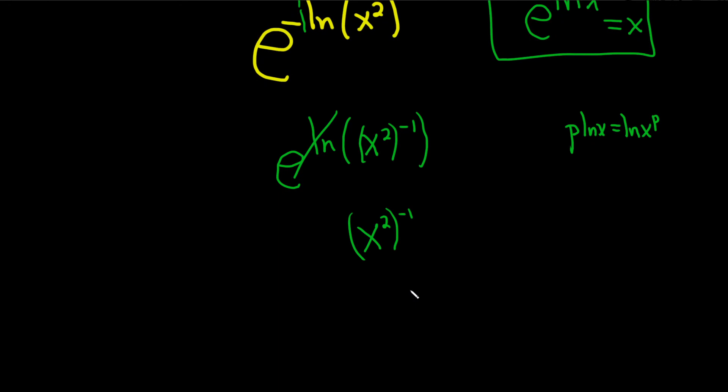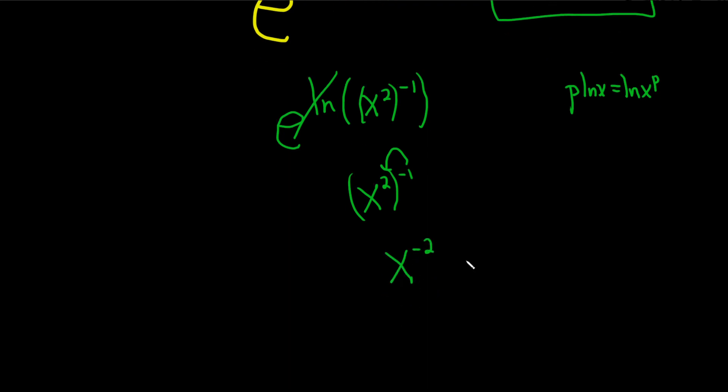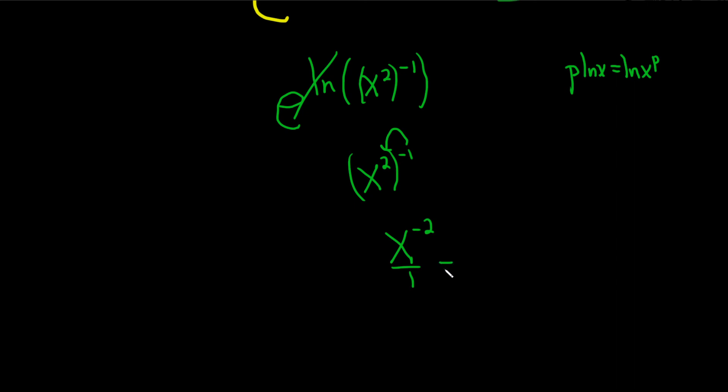Now properties of exponents say we can simply multiply the negative 1 and the 2. So negative 1 times 2 is negative 2. And then we can just bring this downstairs, right? This is really over 1. So when you bring it down, it becomes positive. And so we end up with 1 over x squared.